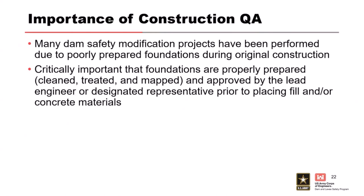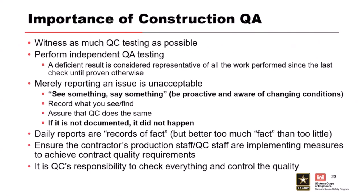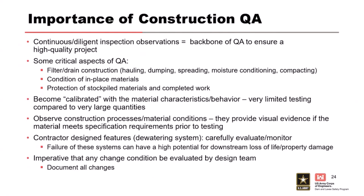Dam safety modification projects - a lot of them have been done because of poor foundation preparation, so it's very important to get that correct. We've talked about cleaning, treating, and mapping the foundations. For construction QA, you want to make sure QA is independent. If you see something, say something and make sure it's corrected on time. The first level of defense for any project should be the QC - the quality control of the contractor. The QA's job is to oversee that QC operation, and from the government side we also do testing that will be used to confirm the project was acceptable. Make sure the design team is involved with any changes.